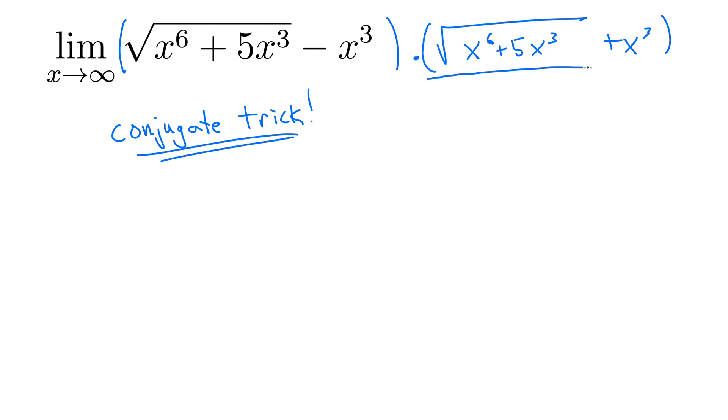So I'm going to divide by the same thing, square root of x to the 6 plus 5x cubed, plus x cubed, right? Because now we've just multiplied by one, and we can multiply by one all day without changing anything.